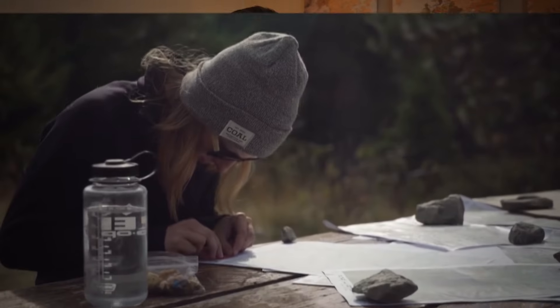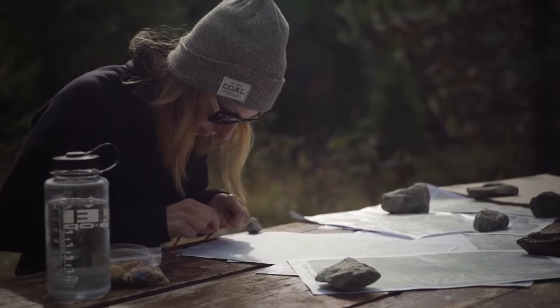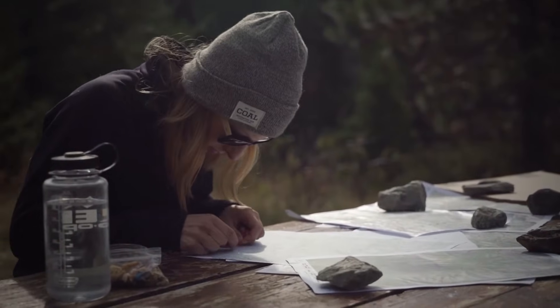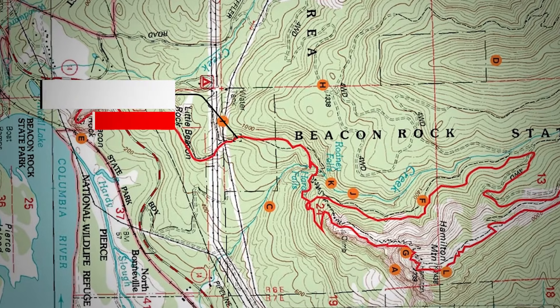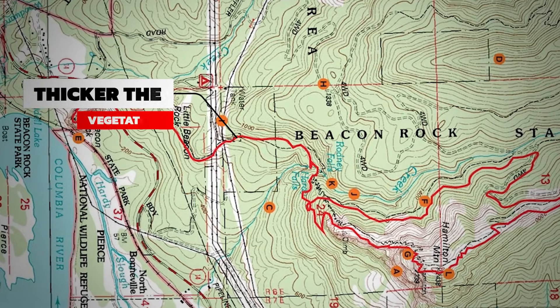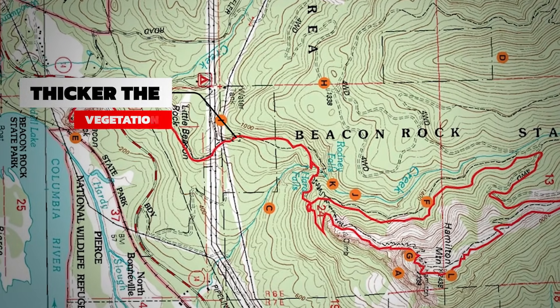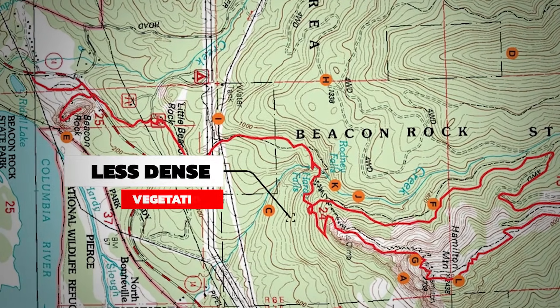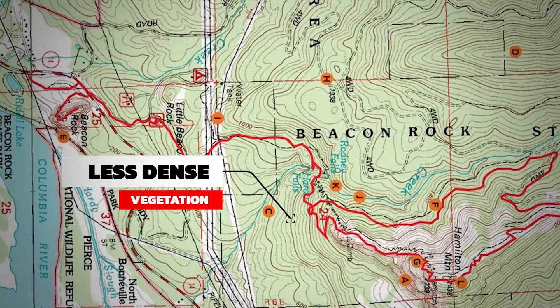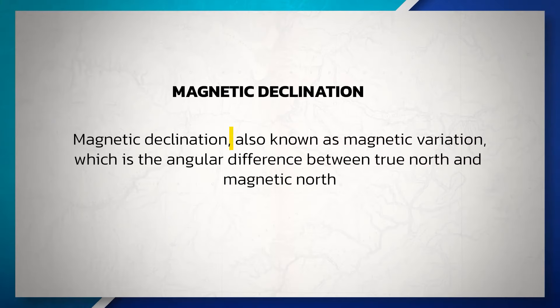When looking at the legend of the map, also pay close attention to what the different symbols, colors, and shapes on the map mean. Generally, the darker the colors on a topographic map, the thicker the vegetation is in the area, while lighter colors generally show areas with less dense vegetation.